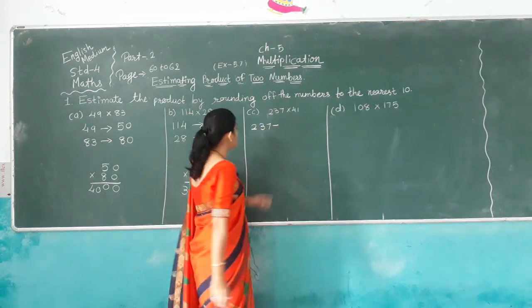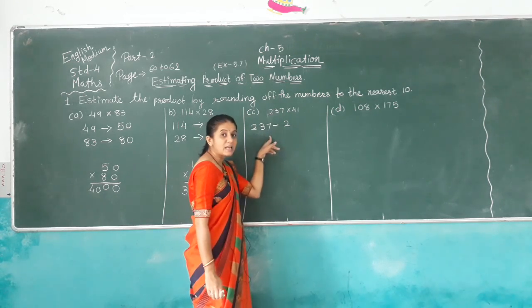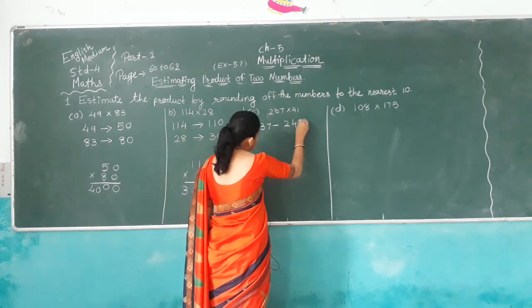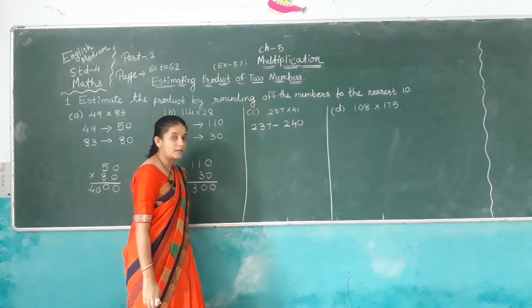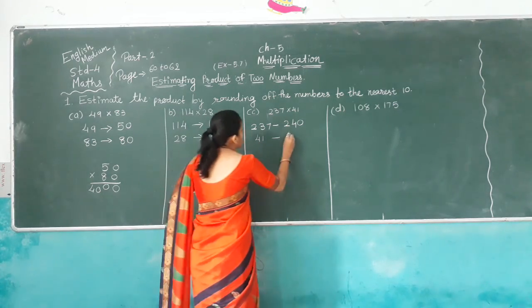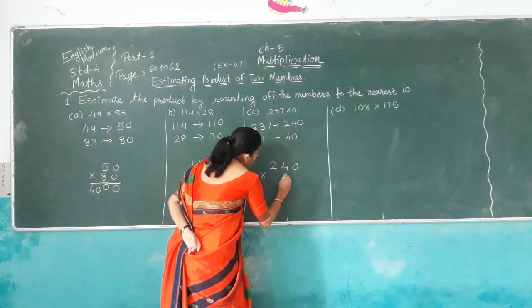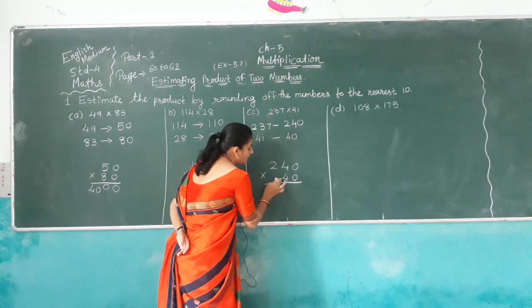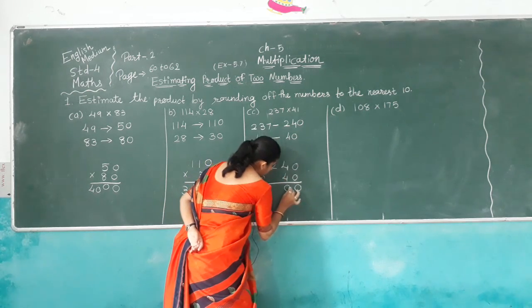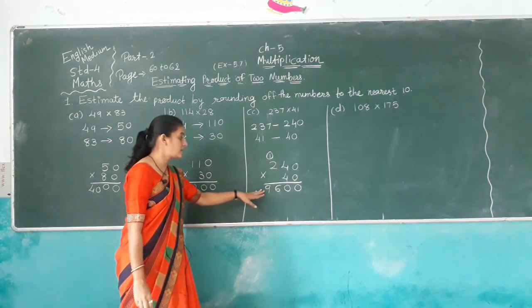Another one: 2,300 rounded to nearest 10 stays 2,300 — the tens digit is 0. Then 41: the ones digit is 1, which is less than 5, so nearest 10 is 40. So 240 multiplied by 40. 4 times 4 is 16, carry 1. 4 times 2 is 8, plus 1 is 9. So we get answer 9,600.